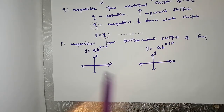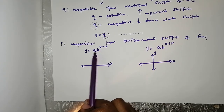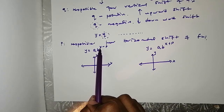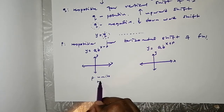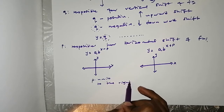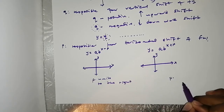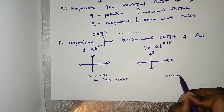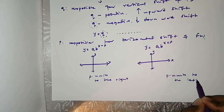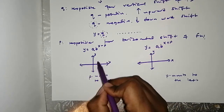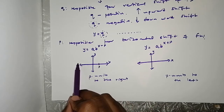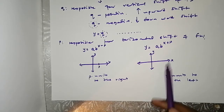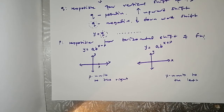When P itself is positive and we have a function like Y equals A times B to the power of X minus P, the entire function is shifted P units to the right. And when we have Y equals A times B to the power of X plus P, the function is shifted P units to the left. P confused quite a number of people because it appears to have an opposite effect.